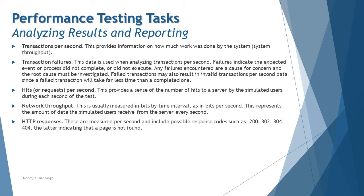Hits per second refers to the number of requests sent — it provides a sense of the number of hits to a server by simulated users each second during the test. Network throughput is usually measured in bits per second and represents the amount of data the simulated user received from the server every second. Hits per second covers requests, while network throughput covers responses. HTTP responses for each API execution are also measured per second and include response codes such as 200, 302, 304, and 404.